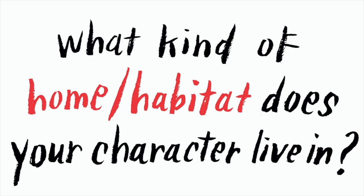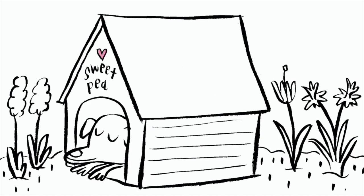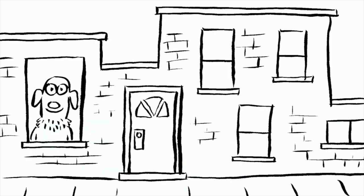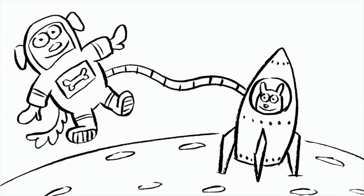For example, does Sweet Pea live in a doghouse, or does she live in an apartment building? Does she live in a city like Brooklyn, or maybe she lives on the moon in a space station? Knowing this in advance will also help you figure out your story.